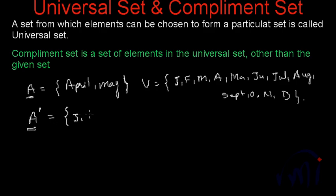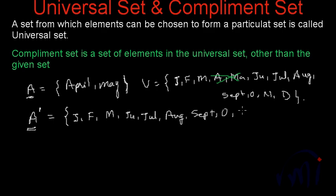All the elements from the universal set which are not in set A will be in its complement set. That means January, February, and March will be there; April and May will not be there. We will have June, July, August, September, October, November, and December. So this set is the complement set of the set of summer holidays. You can also say the set of months when you have school is the complementary set of summer holidays, and vice versa — both set A and A dash are complements of each other.